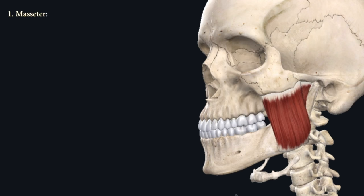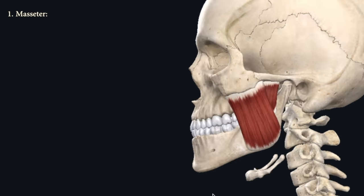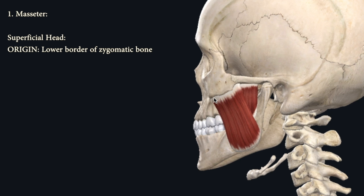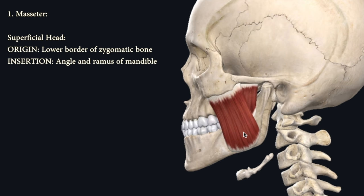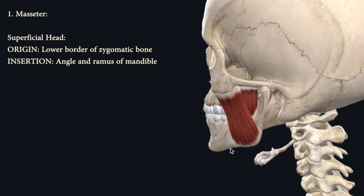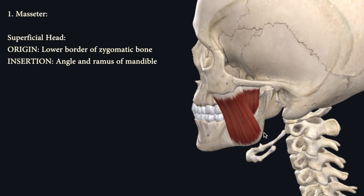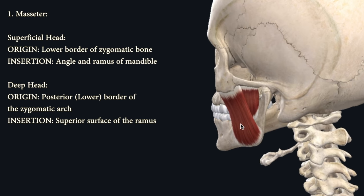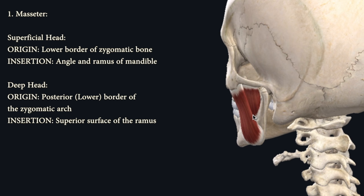Number one is the masseter muscle, which divides into two parts: the superficial part and the deep part. The superficial part originates from the lower border of the zygomatic bone and the anterior lower border of the zygomatic arch, and inserts into the inferior surface of the ramus of the mandible. The deep part originates from the lower border of the zygomatic arch and inserts into the superior surface of the ramus of the mandible.